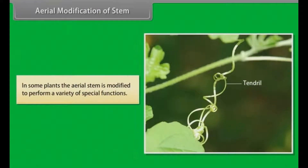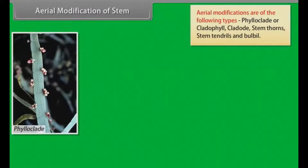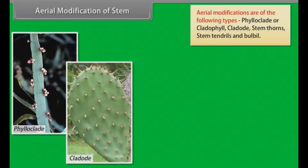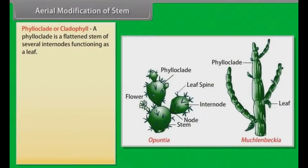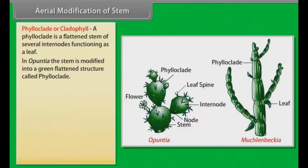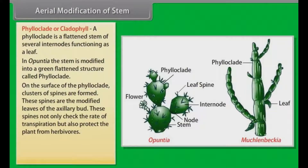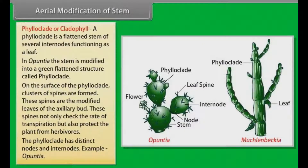In some plants, the aerial stem is modified to perform a variety of special functions. Aerial modifications are of the following types: phyloclade (or cladophile), cladode, stem thorns, stem tendrils, and bulbil. A phyloclade is a flattened stem of several internodes functioning as a leaf. In Opuntia, the stem is modified into a green flattened structure called phyloclade. On the surface of the phyloclade, clusters of spines are formed — these spines are the modified leaves of the axillary bud. These spines not only check the rate of transpiration, but also protect the plant from herbivores. The phyloclade has distinct nodes and internodes. Example: Opuntia.